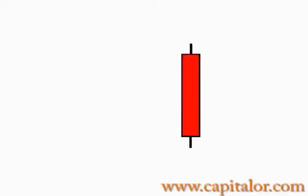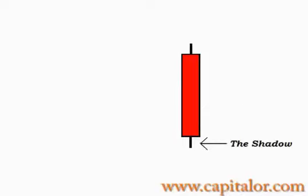A candlestick where price went down and closed down I will very conveniently call a negative candlestick — though there isn't anything special negative about it. You could place a trade on a negative candlestick as well as a positive candlestick. The area of the negative candlestick which is red is called the real body. The little line below the real body is called the shadow, and the furthest point of the shadow is called the low — the lowest price which that specific candlestick did reach, same as with a positive candlestick.